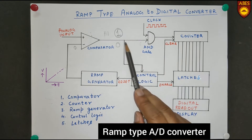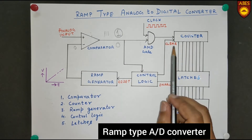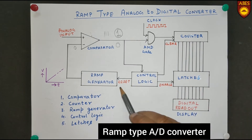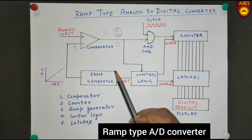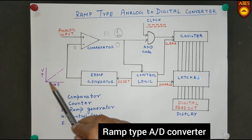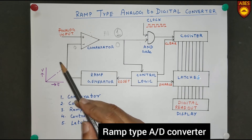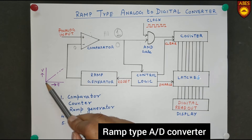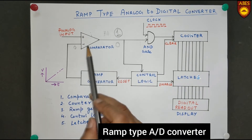When this information reaches the Control Logic, it performs three functions: it clears the counter, enables the latches, and resets the Ramp Generator. The Ramp Generator produces a waveform that increases continuously and linearly with time — initially 0, but it keeps increasing as time passes.